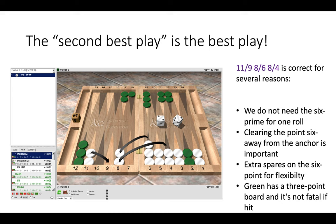If green should roll a six-one, for example, or a five-two, there are a few other rolls, and hit us in the outfield, then we can re-enter quickly and bring the checker around.